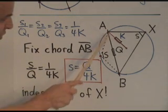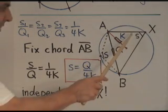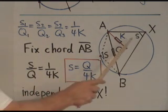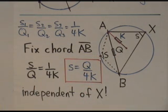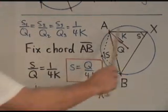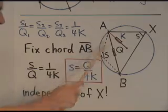Alright, so what we're going to do is we're going to fix a chord AB on that circle. And we're going to consider this point X on the circle as being arbitrary. Gives us a triangle and we'll say that that quadrance there is Q and that spread is S. Spread law here tells us that S over Q equals 1 over 4K, K the quadrance of that circle. So immediately from that, we deduce that S equals Q over 4K, which means that if you know Q, then S is determined. In other words, no matter where X is on the circle, that spread is always the same. We say that's the spread subtended by that chord.